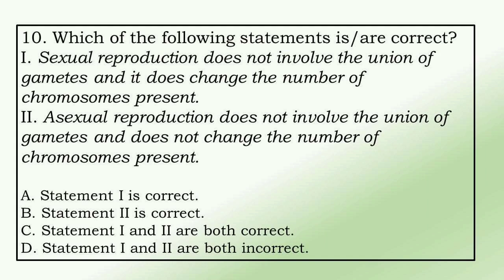10. Which of the following statements is or are true? 1. Sexual reproduction does not involve the union of gametes and it does not change the number of chromosomes present. 2. Asexual reproduction does not involve the union of gametes and does not change the number of chromosomes present. a. Statement 1 is correct, b. Statement 2 is correct, c. Statement 1 and 2 are both correct, d. Statement 1 and 2 are both incorrect.